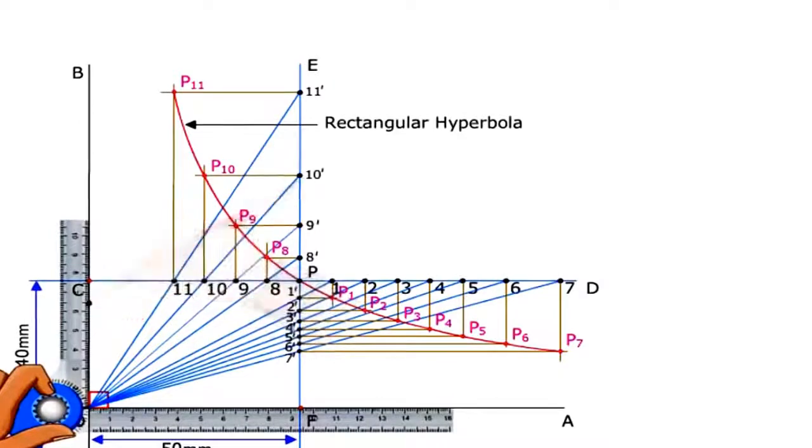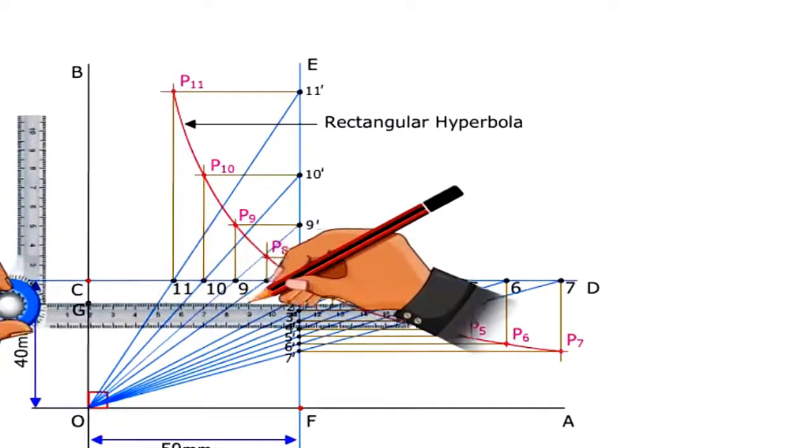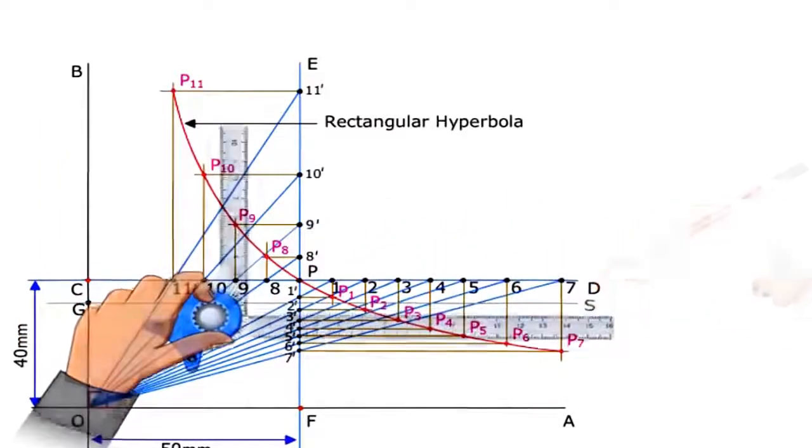Locate the point M on the curve by drawing a line GS parallel to OA and at a distance 30mm from it.